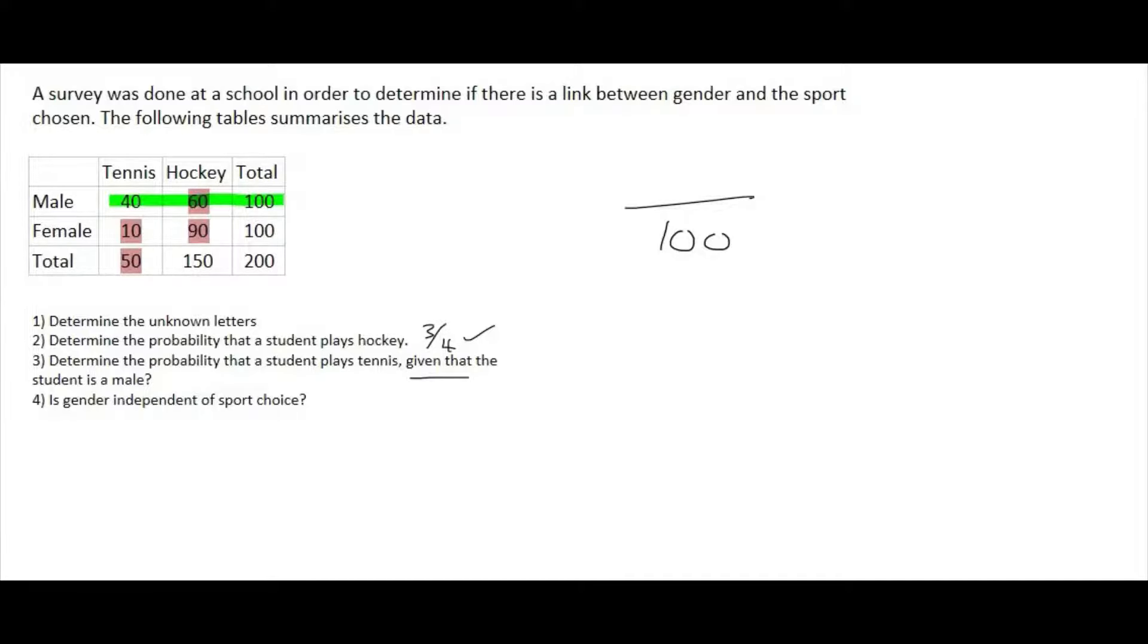So out of those 100 people, how many of them play tennis? Well, there's 40 of them who play tennis. We can see that over there. And so if you simplify that on the calculator, you're going to end up with a value of 2 over 5.